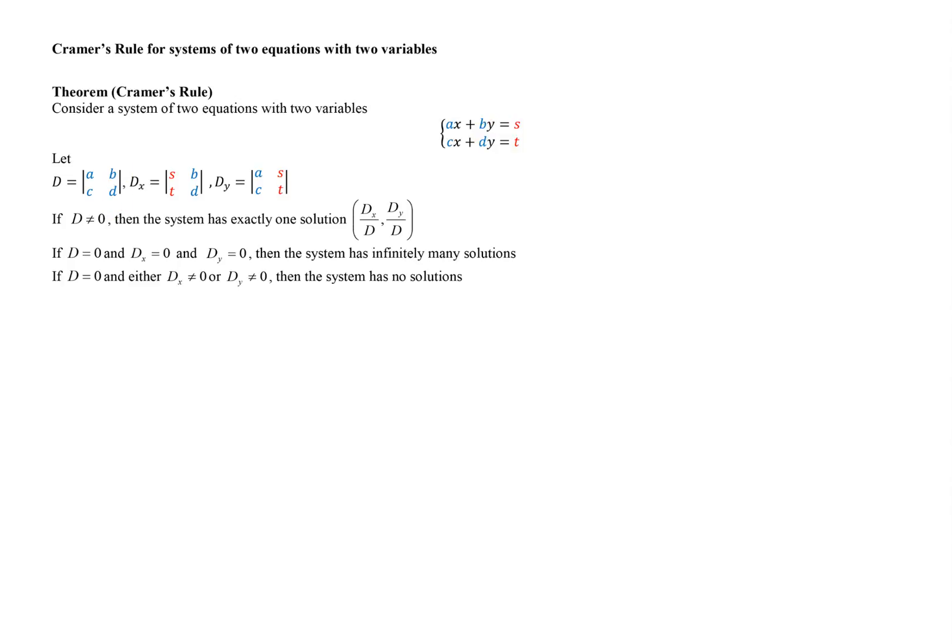Then we define determinant D_X by replacing the column of coefficients of X in the main determinant with the column of numbers from the right-hand side, leaving the column of coefficients of Y intact.